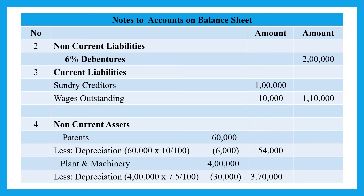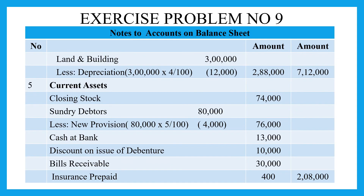On the asset side, there are non-current assets and current assets. Non-current assets: patent is Rs. 60,000 less depreciation of Rs. 6,000, giving a net value of Rs. 54,000. Plant and machinery is Rs. 4 lakh less depreciation Rs. 30,000, giving Rs. 3,70,000. Land and building is Rs. 3 lakh less depreciation Rs. 12,000, giving Rs. 2,88,000. Total non-current assets are Rs. 7,12,000.